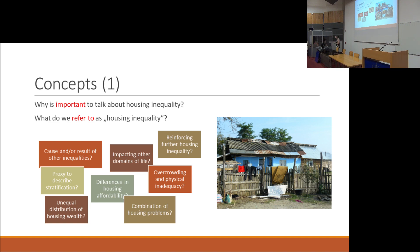Literature is quite happy to talk about housing inequalities through the lens of housing affordability — who can afford what, and of course why, and where, and what chances are to change those housing positions. And then you will also find literature about overcrowding and physical inadequacy when one wants to describe the phenomenon itself.